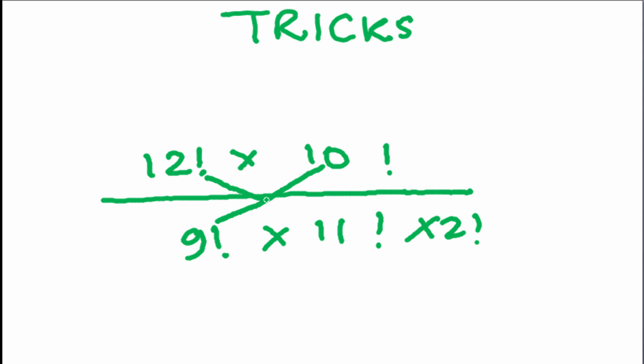This 12 factorial divided by 11 factorial will give you 12. 12 into 10 by 2. That will be 60.